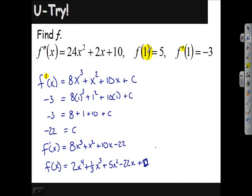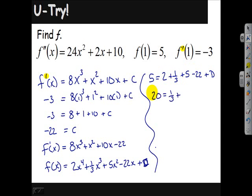f of 1 is supposed to equal 5. So when I put 1 into this function, I'm supposed to get 5. So let's put 1 into that function and get 5. 2 times 1 to the fourth is 2 plus 1 third times 1 cubed is 1 third plus 5 times 1 squared is 5 minus 22 times 1 plus d. Let's see what we have here. I have 7 minus 22 would be negative 15. If I add that to the other side, I have 20. I still have that 1 third to deal with plus d. I need to subtract a third. So basically, I have 19 and 2 thirds is equal to d.